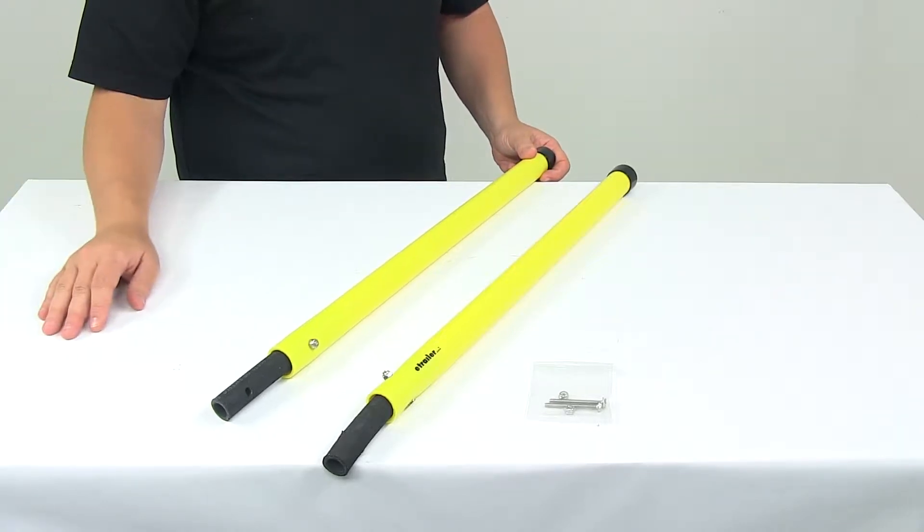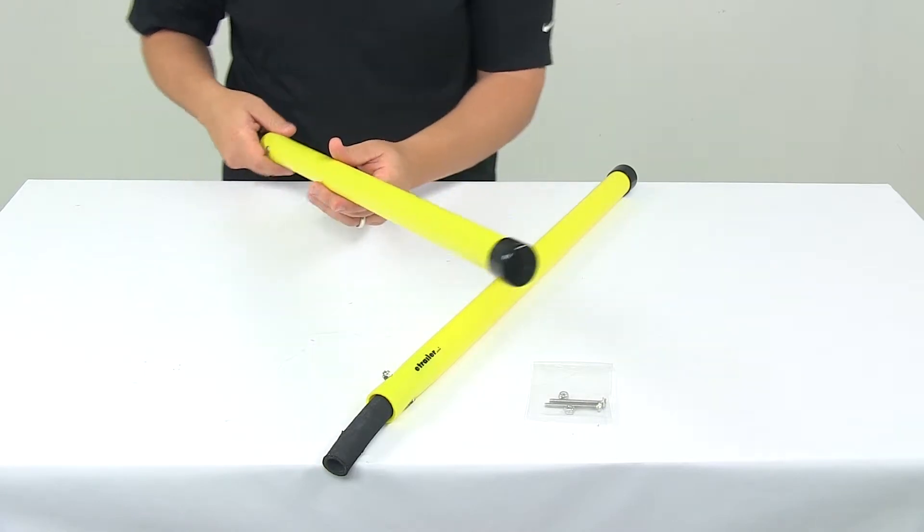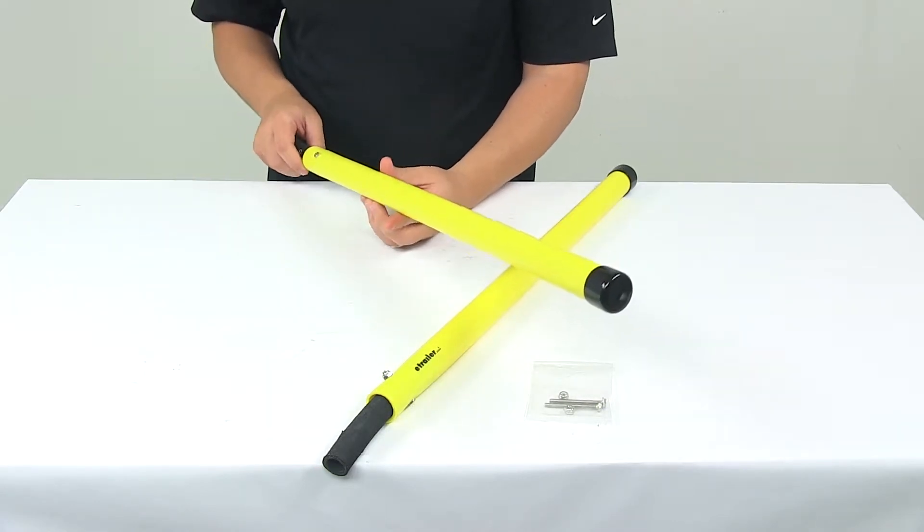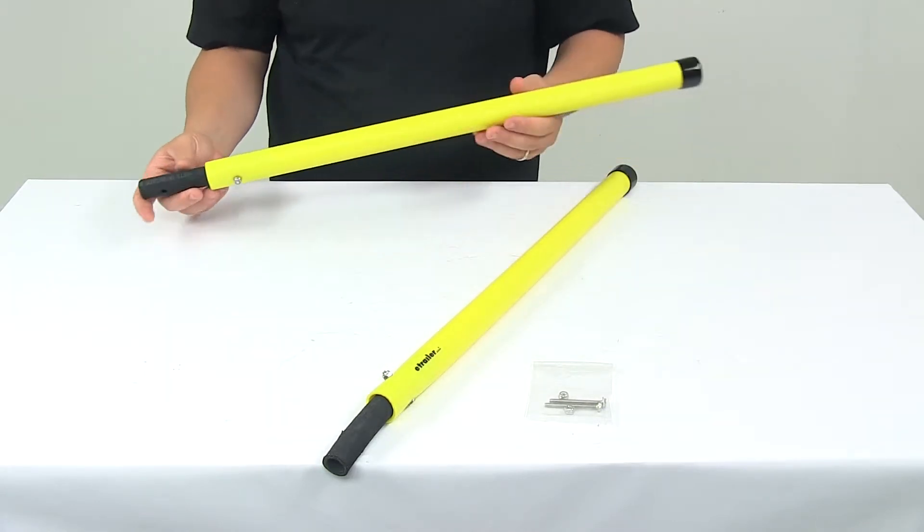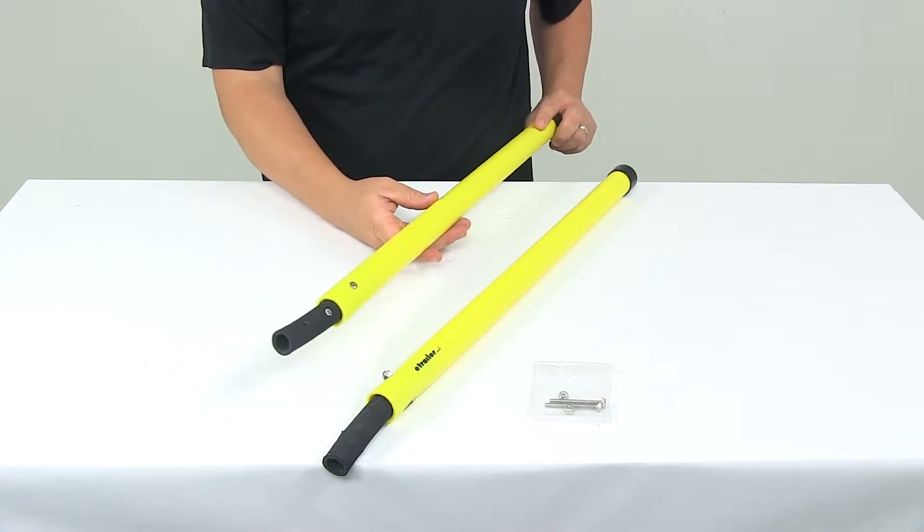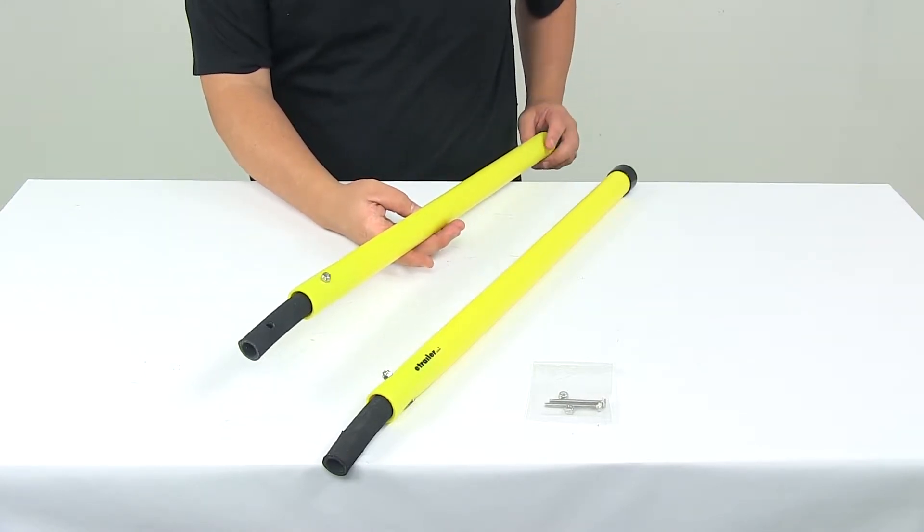Today we're taking a look at the fluorescent yellow oversized bumper sight guides. These oversized bumper sight guides are ideal for applications where judging distance is a challenge, such as a flatbed trailer bumper.